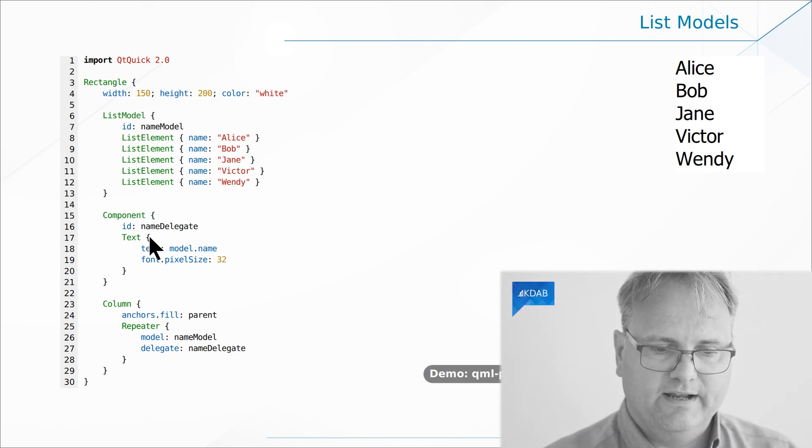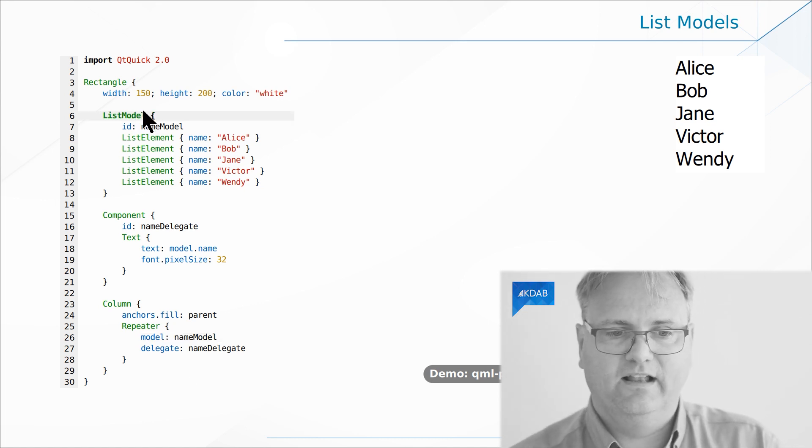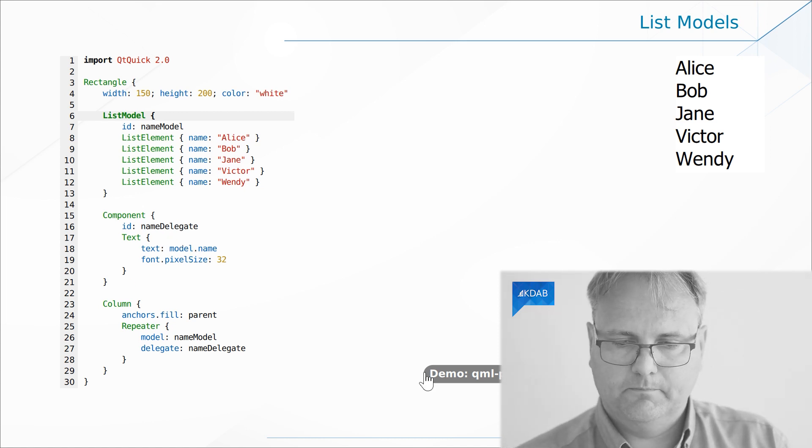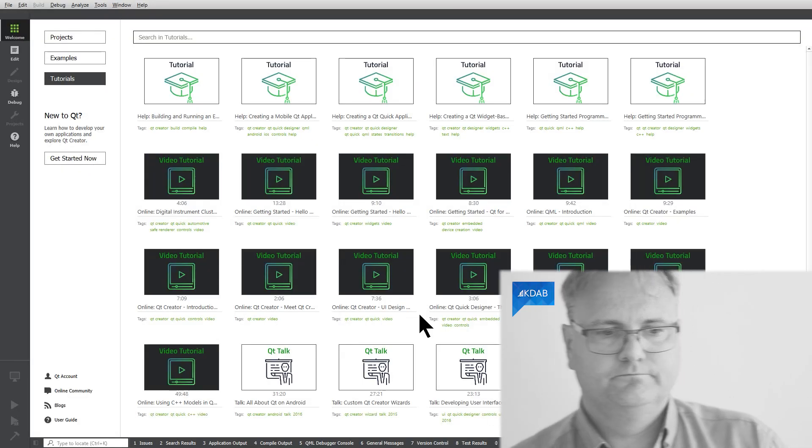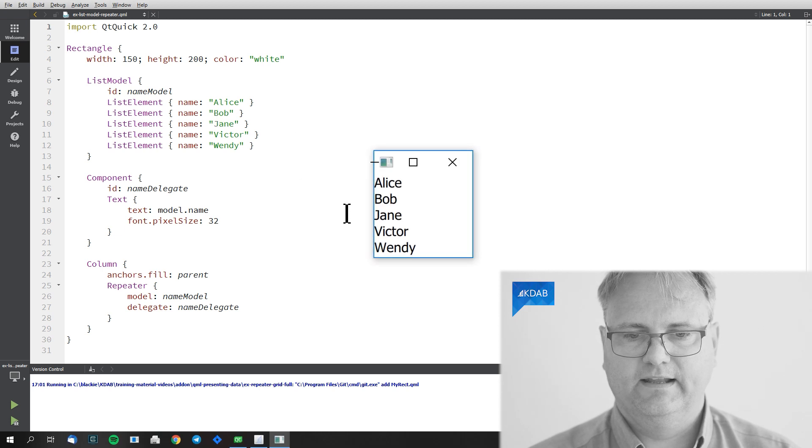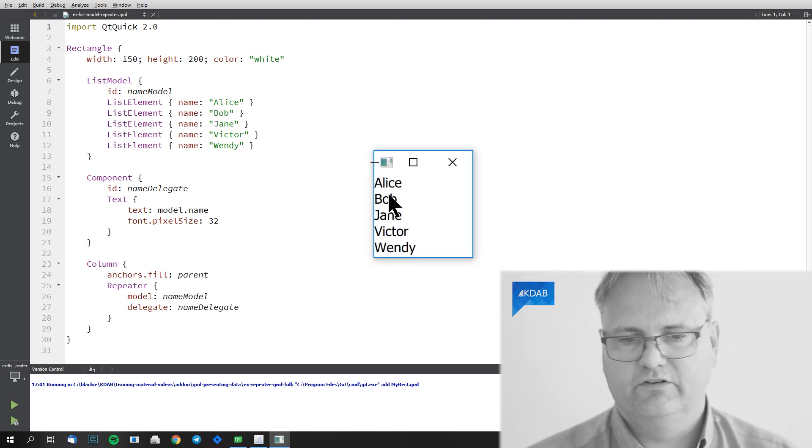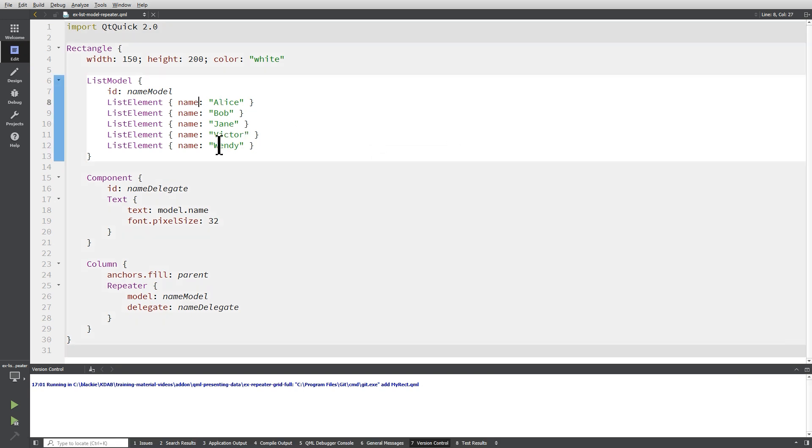The way that it works is that this time, I got my repeater down here. The model is taking its data from name model. And my name model up here is a list model. And the list model contains a number of list elements. Alice, Bob, Jane, Victor, and Wendy here. And this is my delegate just like we saw it before. Let me try and bring this up because we can make a few changes to it that's interesting. So, first of all, let's run. I got my list. Alice, Bob, Jane, Victor. I cannot do the scrolling of it because it's just a repeater. It's not a list view as such. The name is something that I came up with. I decided to call it name. It's not something that the people from Nokia or later the Qt company came up with. It's me, Jesper Peterson, that came up with, let me call this property name.